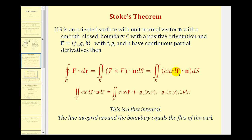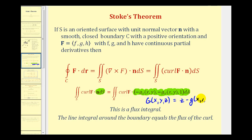Remember the curl of F can be written as del crossed with the vector field F, because this form reminds us of how to determine the curl of F. Then remember from the video on the surface integral of a vector field, N dS is equal to this vector field here times dA, given we have a positive orientation. Remember this really is just the gradient of big G, where big G is equal to z minus g of x and y. And because we have a vector field dotted with N, this is called a flux integral. So we can say that the line integral around the boundary C equals the flux of the curl over the surface S.